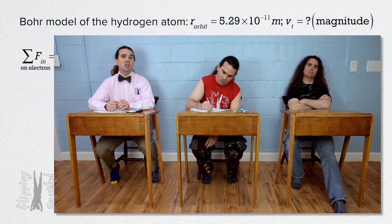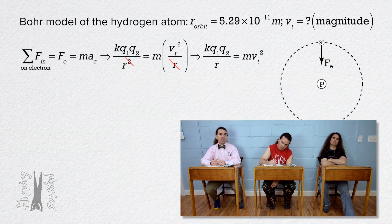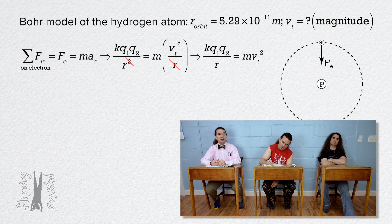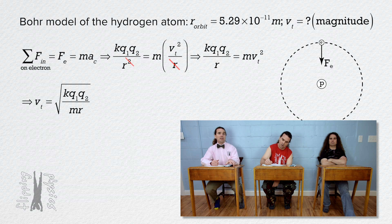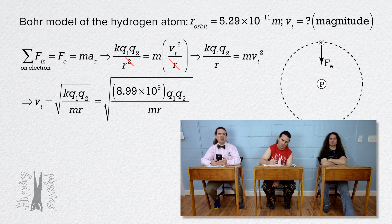Billy? Okay, we can solve for the tangential velocity of the electron by dividing the equation by mass and taking the square root of the whole equation. We get tangential velocity equals the square root of the Coulomb constant times charge one times charge two divided by the quantity mass times radius.